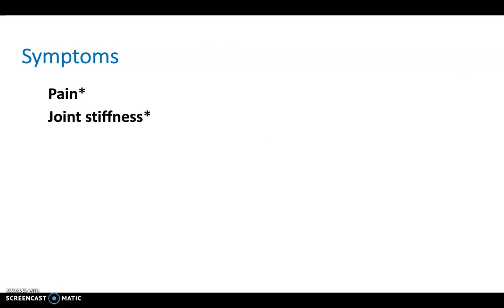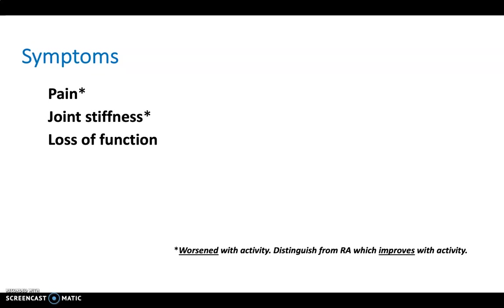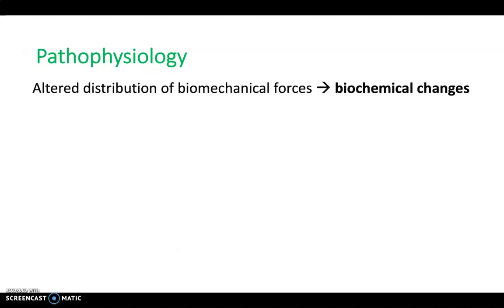Classical symptoms of osteoarthritis include pain, joint stiffness, and loss of function. With pain and joint stiffness, the patient will say these worsen with activity. It's important to distinguish this from rheumatoid arthritis, where pain and joint stiffness improve with activity.